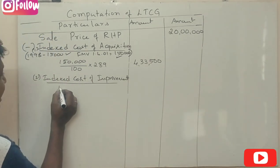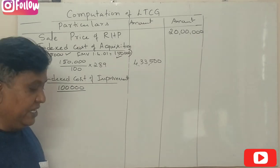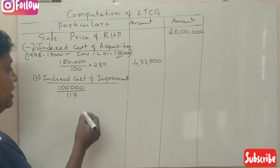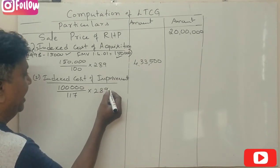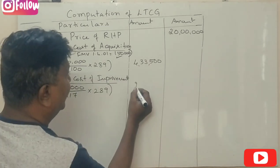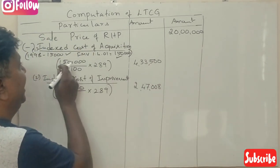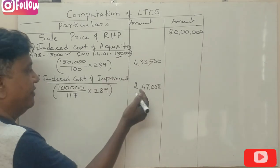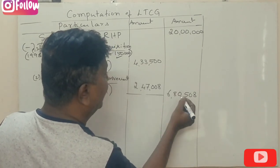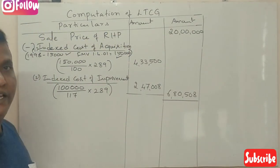The indexed cost of improvement for the Rs. 1 lakh spent in November 2005 is: 1,00,000 divided by 117 (CII for 2005-06) multiplied by 289 (CII for 2019-20), which equals Rs. 2,47,008. Adding the indexed cost of acquisition (Rs. 4,33,500) and indexed cost of improvement (Rs. 2,47,008), the total indexed cost is Rs. 6,80,508.